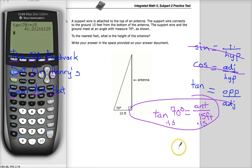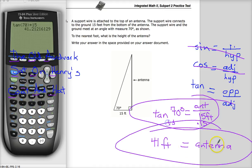So my final answer for this question is the antenna is equal to 41 feet, approximately. So there you go, easy peasy.